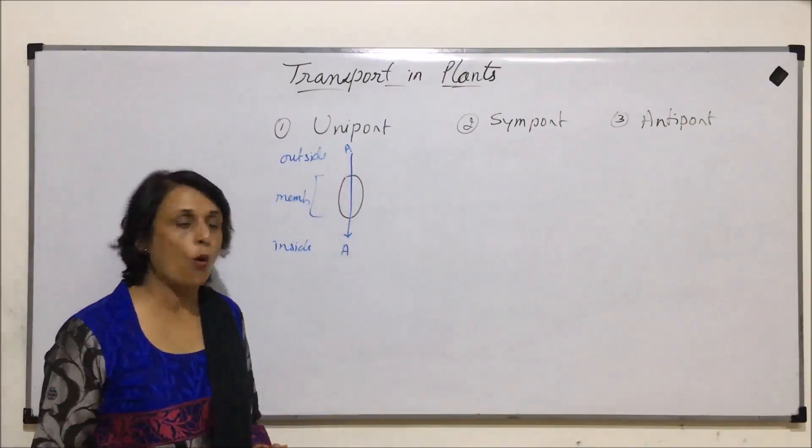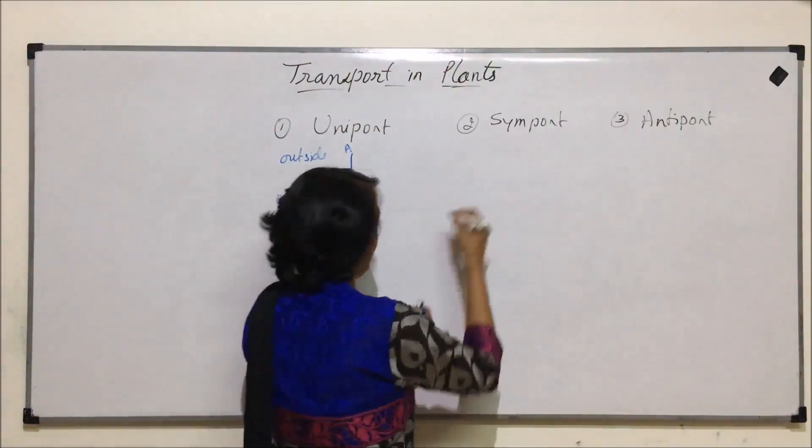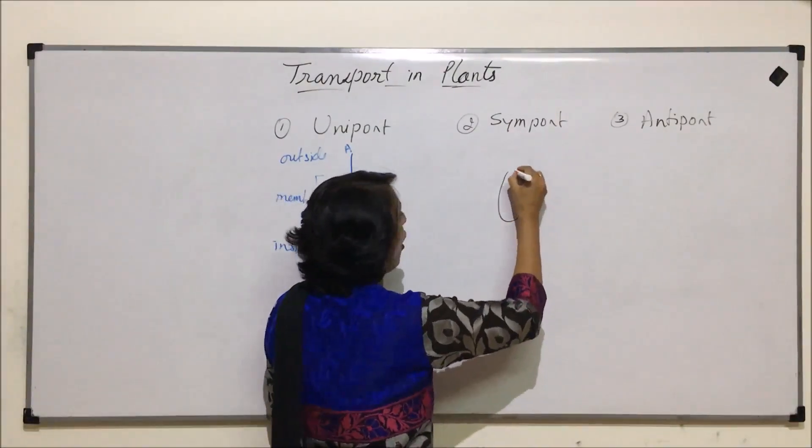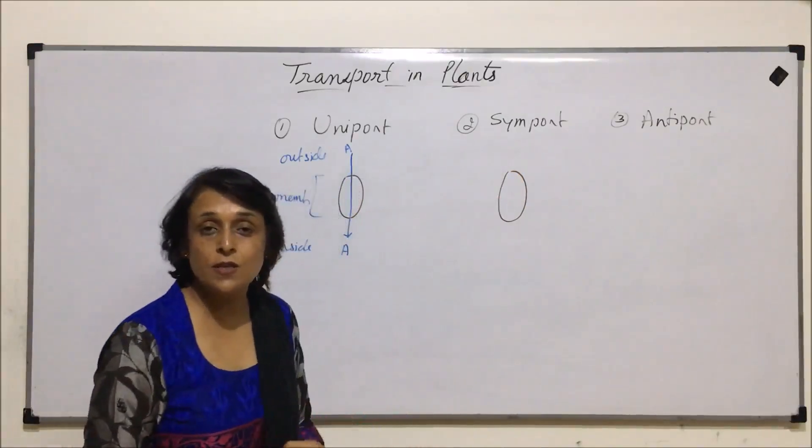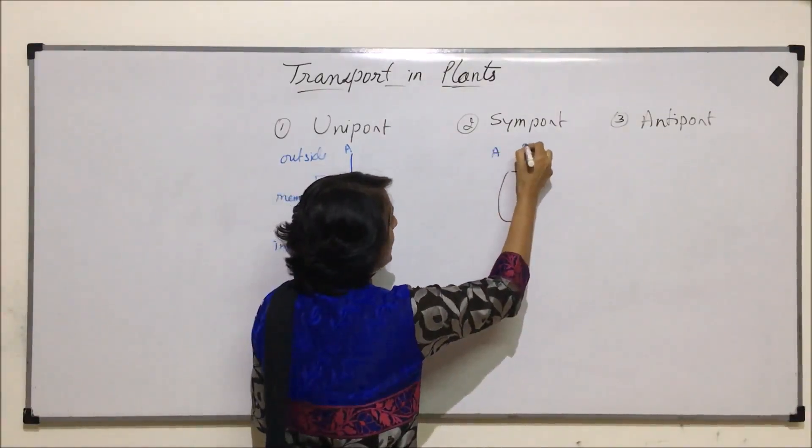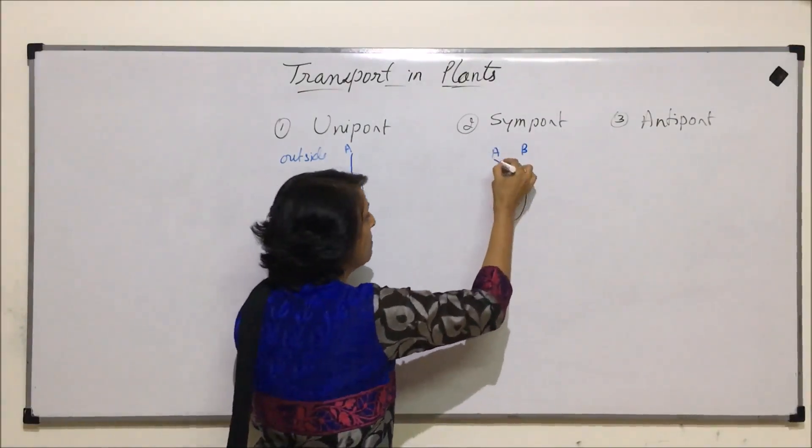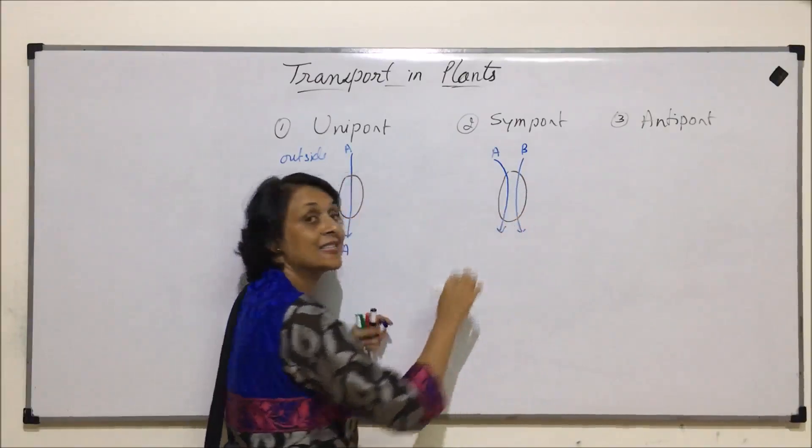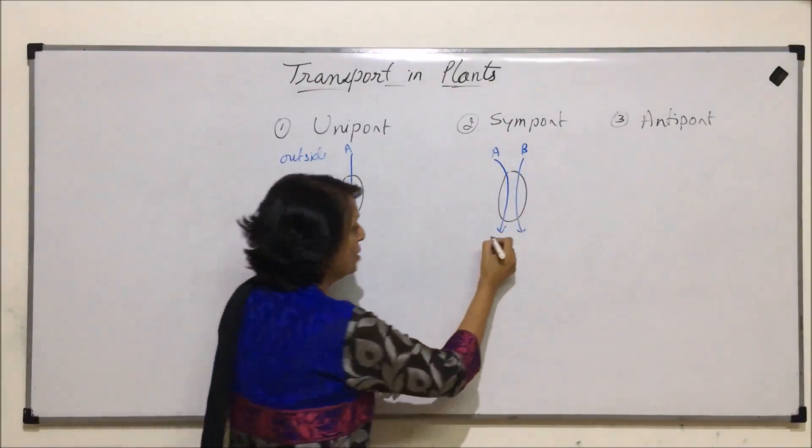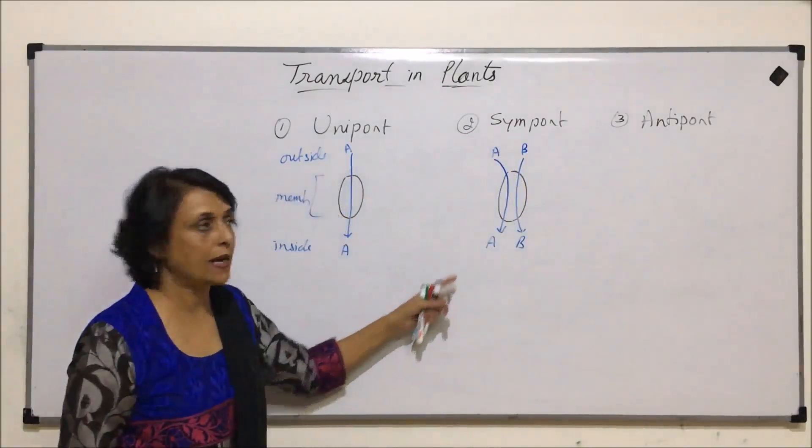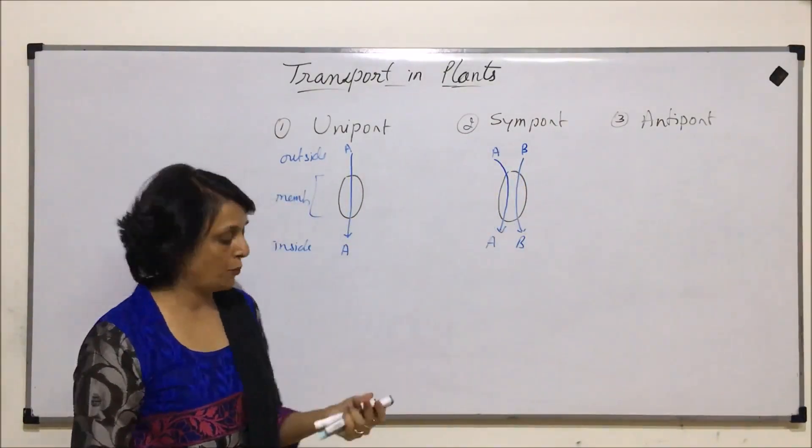We will take the examples after we understand all three. Symport, again there is a protein which is helping in transport of two substances in the same direction. If there are substances like A and B outside, both substances are transported by the same protein in the same direction. So A and B are going to come from outside to the inner side with the help of the same protein.